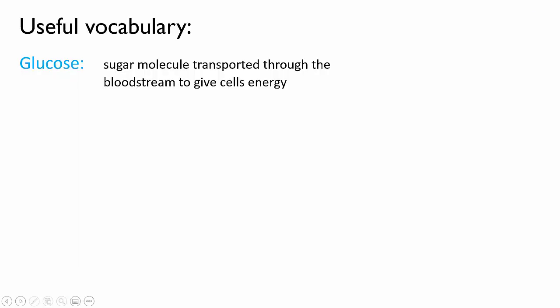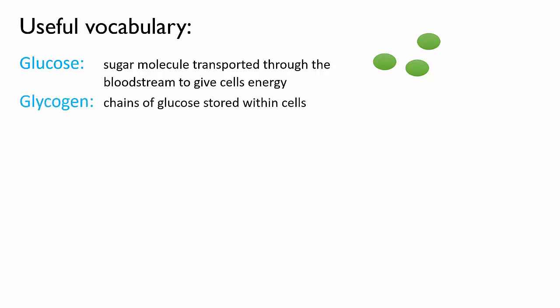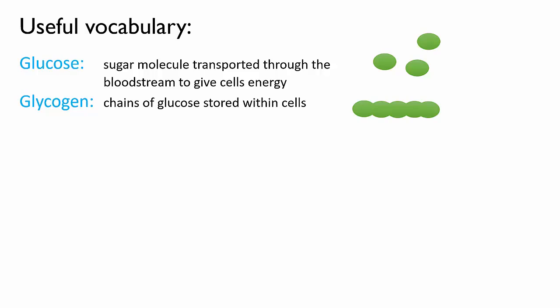To make sure my explanation of this is clear, I'm first going to go over a little bit of vocabulary. We've just talked about glucose — that's a type of sugar molecule. Imagine each of these green ovals here is a glucose molecule. Glucose molecules can also be linked together into a long chain-like molecule called glycogen. When the body needs energy it uses glucose to do respiration, but when it needs to store excess glucose away for later use, it converts it into glycogen and stores it in cells.